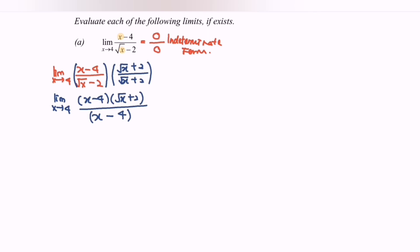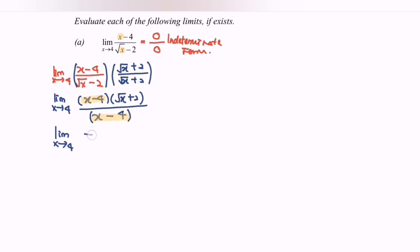We notice that we have a common term which is x minus 4 in both the numerator and the denominator, so we can simplify. And finally we will have the limit when x approaching 4 of square root of x plus 2. Then by substituting the value, we get square root of 4 plus 2, which gives us a limit value of 4.